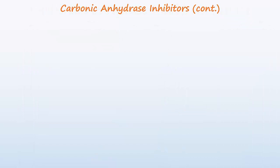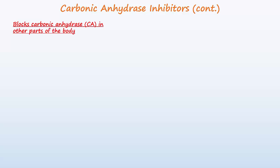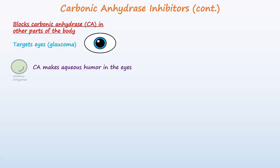Carbonic anhydrase inhibitors also block the enzyme carbonic anhydrase located in other parts of the body. Clinically, these drugs can also be used to target the enzymes in the eyes, which is important for the treatment of glaucoma. In the eyes, carbonic anhydrase is needed to make aqueous humor. So if you block the enzyme with an inhibitor, then aqueous humor production drops, and intraocular pressure will therefore also drop.